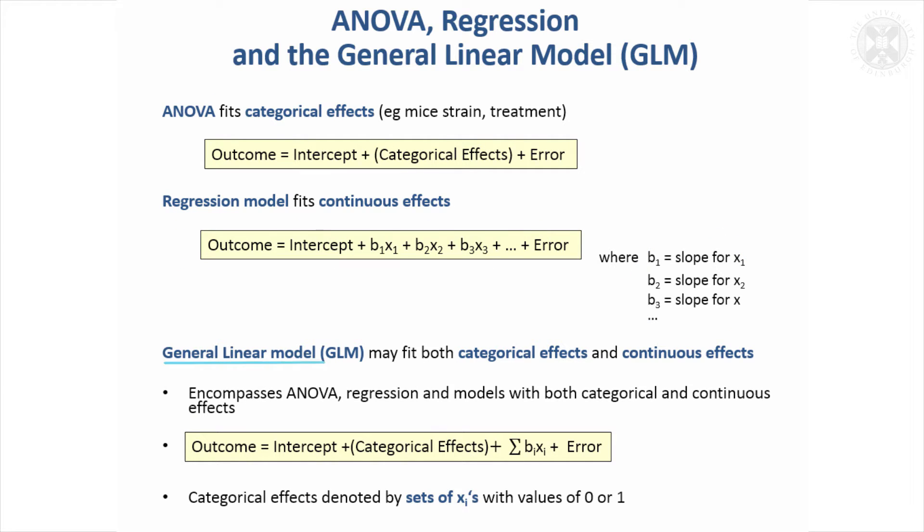And so the general linear model, which is often called a GLM, you can fit both categorical effects. You can model both groupings of the data, and you can also fit continuous effects. So it encompasses, as I said, ANOVA, regression, and models that have both categorical and continuous effects in them.